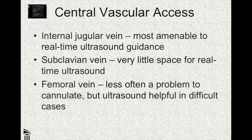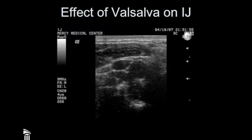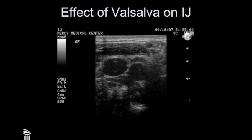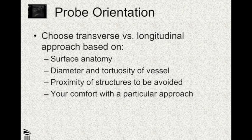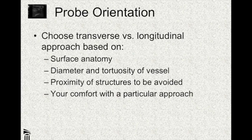Let's talk about central vein access. The central veins cannulated are the internal jugular, the subclavian, and the femoral. I'm going to talk mostly about the internal jugular because it's the most popular and the most amenable to ultrasound guidance. Here's the internal jugular with the patient doing a Valsalva maneuver, just to demonstrate how distensible it is. With central veins, you can do either transverse or longitudinal, and you choose based on surface anatomy — how long or short the patient's neck is — as well as how tortuous the vessel is, how close structures to be avoided are, and your comfort with a particular approach.